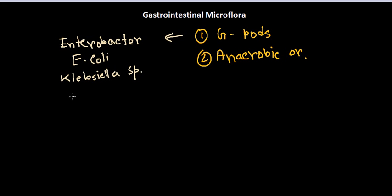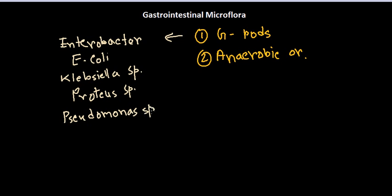We also have Proteus species and Pseudomonas species — all of them belonging to the gram-negative rods. You need to learn very carefully about Enterobacter, E. coli, Klebsiella, Proteus, and Pseudomonas because they are very important. They are related with our digestion and, to a lesser extent, with the absorption of our food.